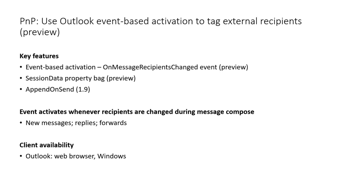The event activates whenever recipients are changed during message composition, including replies and forwards. It's only available in Outlook on Web and Windows for now. What the sample does is tag external recipients — if you add recipients that are external to your organization, we add the term 'external' in square brackets to the subject, and on send, there will be a disclaimer saying this email has external recipients.